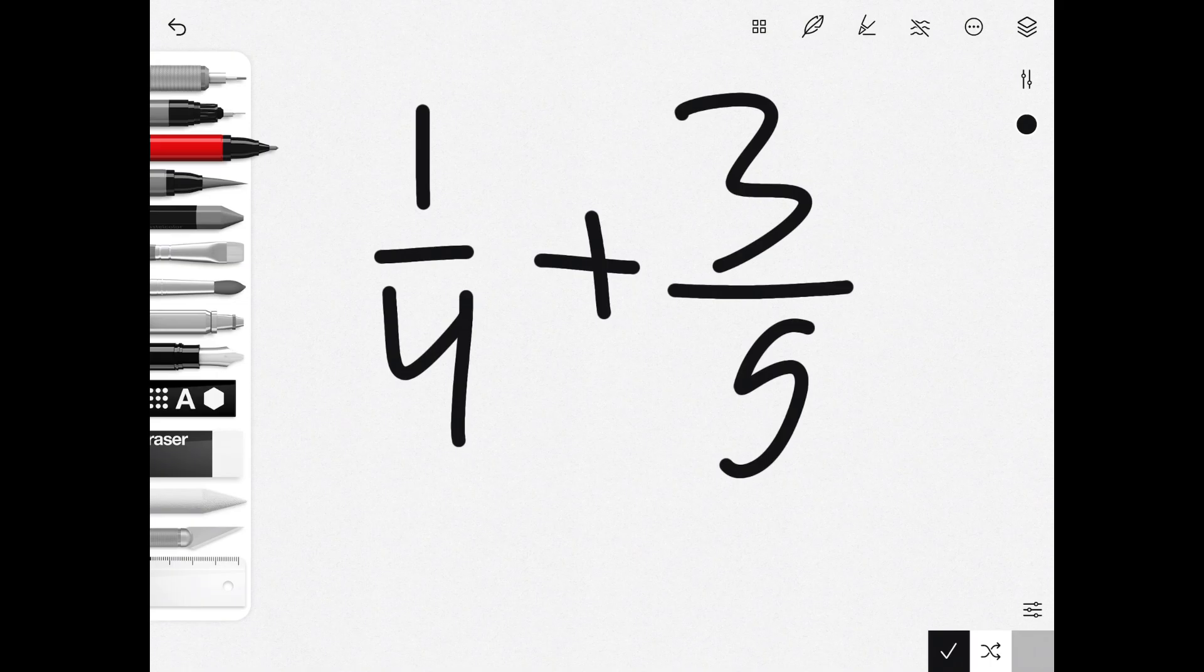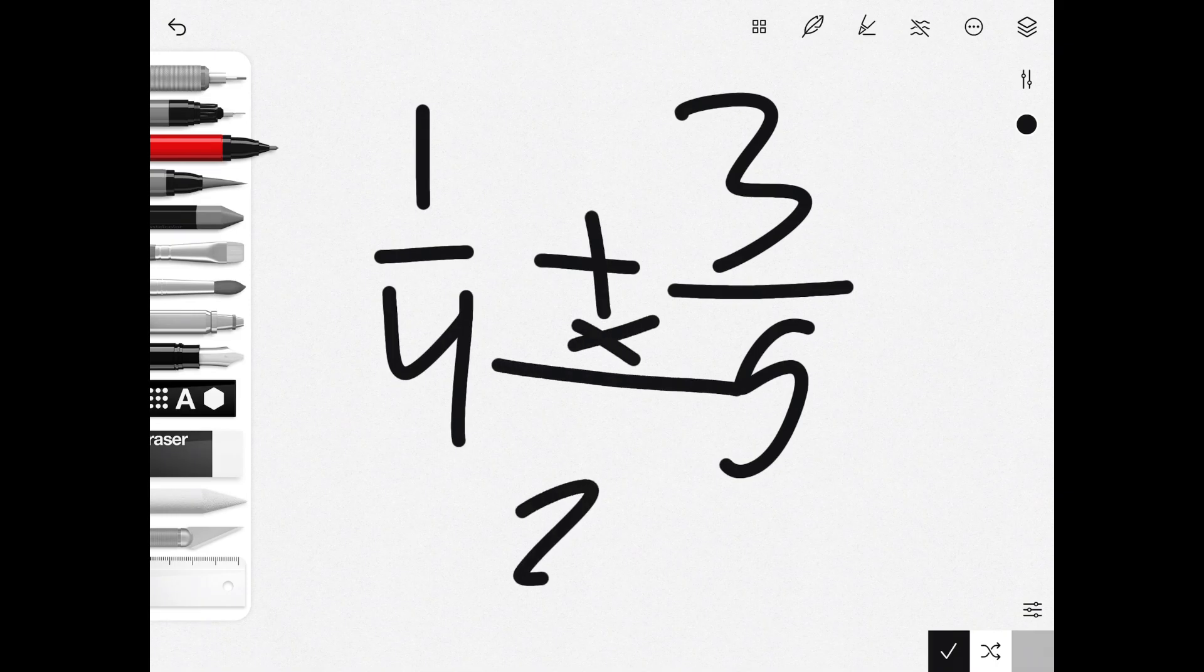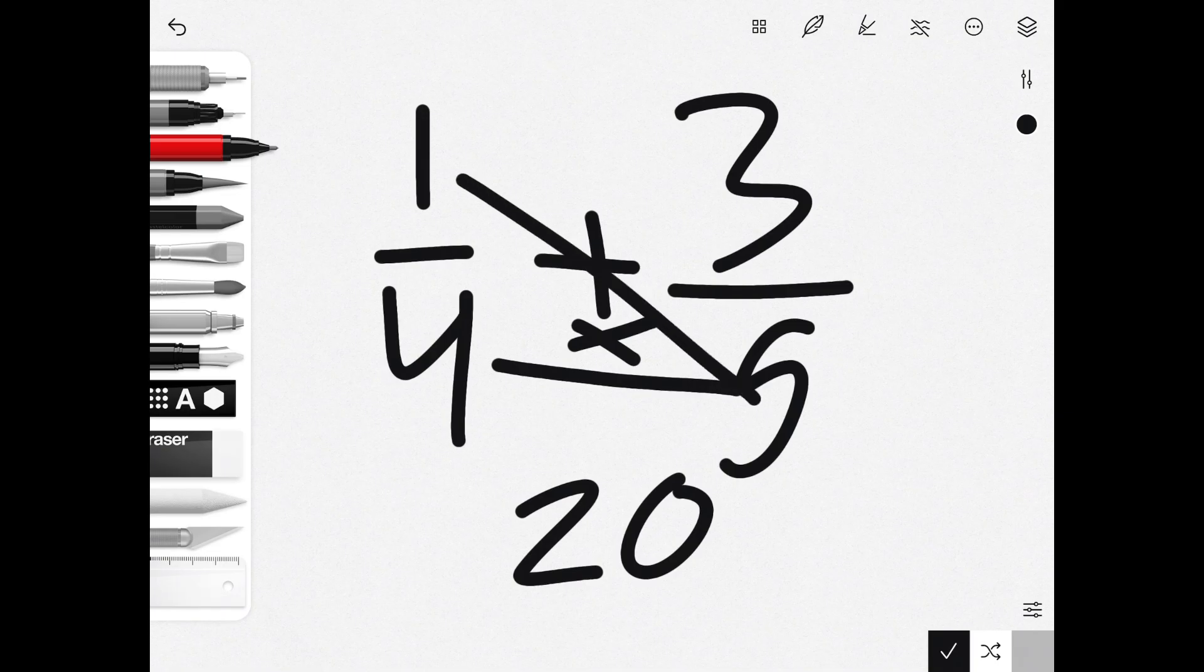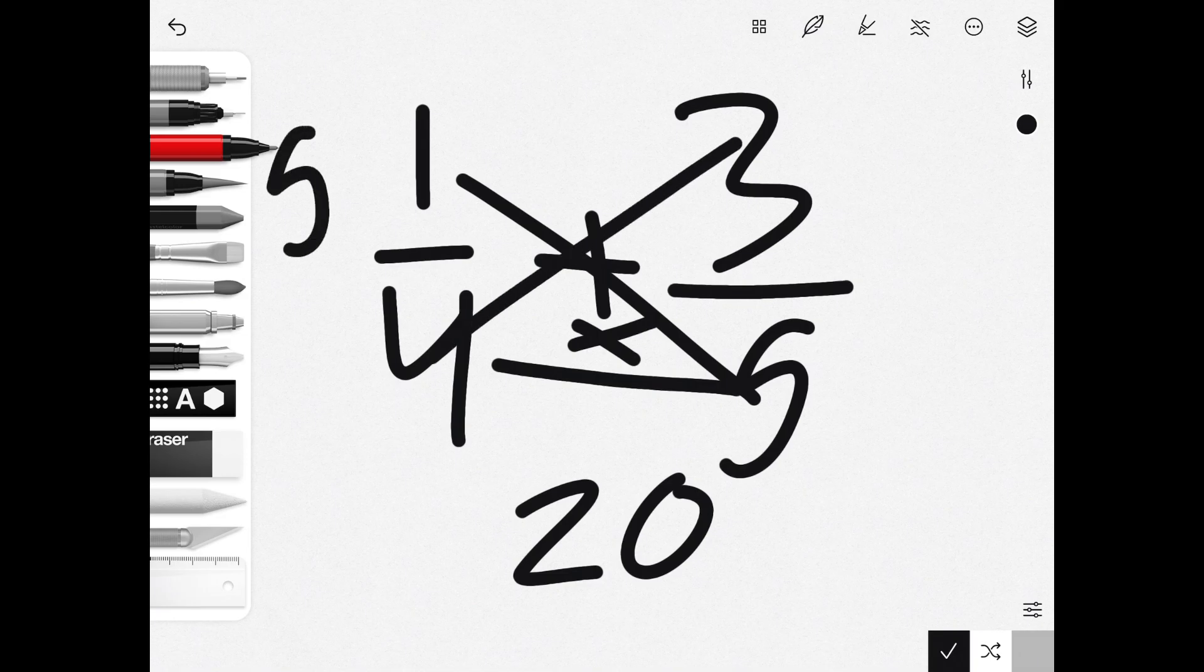How we're going to solve this is: 4 times 5 equals 20, 5 times 1 equals 5, and 4 times 3 equals 12.